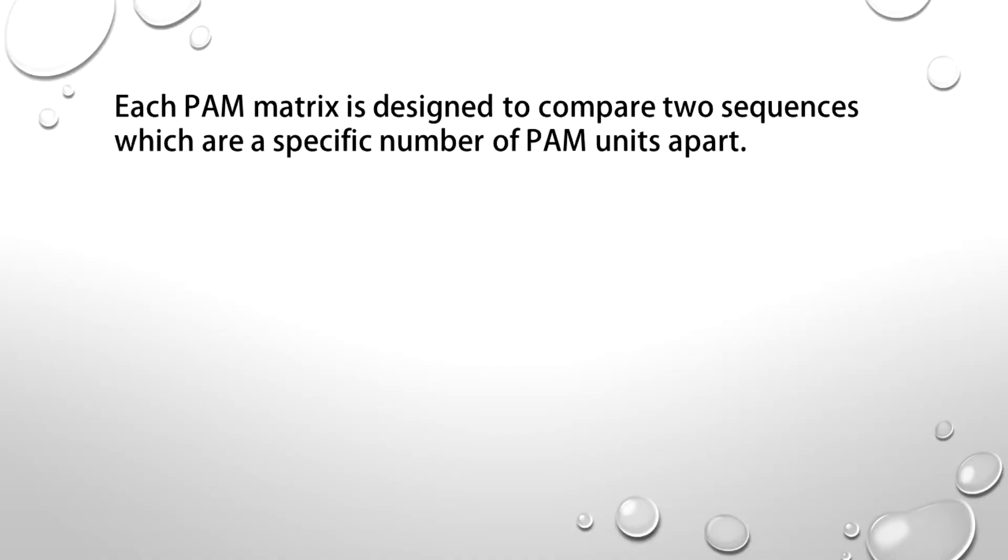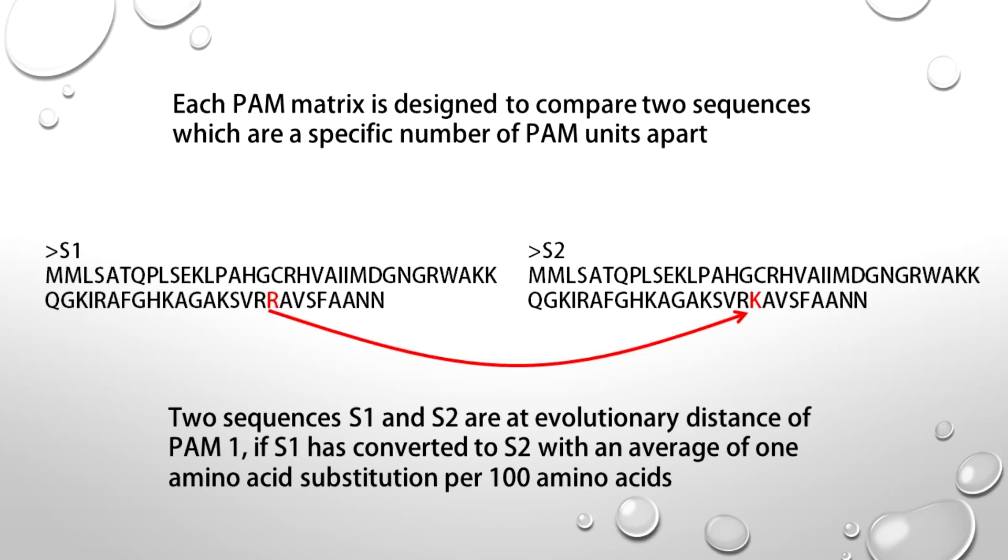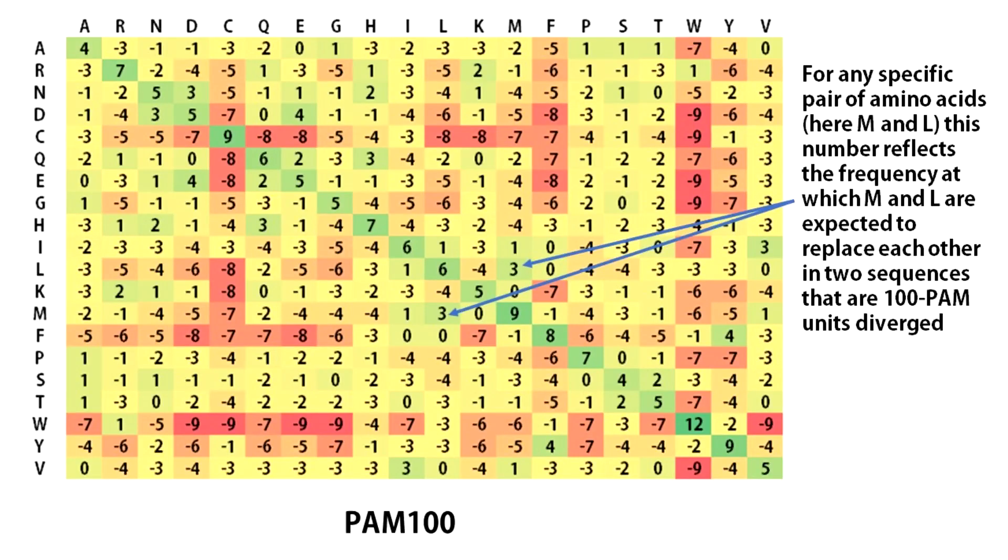Each PAM matrix is designed to compare two sequences which are a specific number of PAM units apart. Two sequences S1 and S2 are at evolutionary distance of one PAM if S1 has converted to S2 with an average of one amino acid substitution per 100 amino acids. For any specific pair of amino acids like here M and L, this number included in the PAM 100 matrix reflects the frequency at which M and L are expected to replace each other in two sequences that are 100 PAM units.